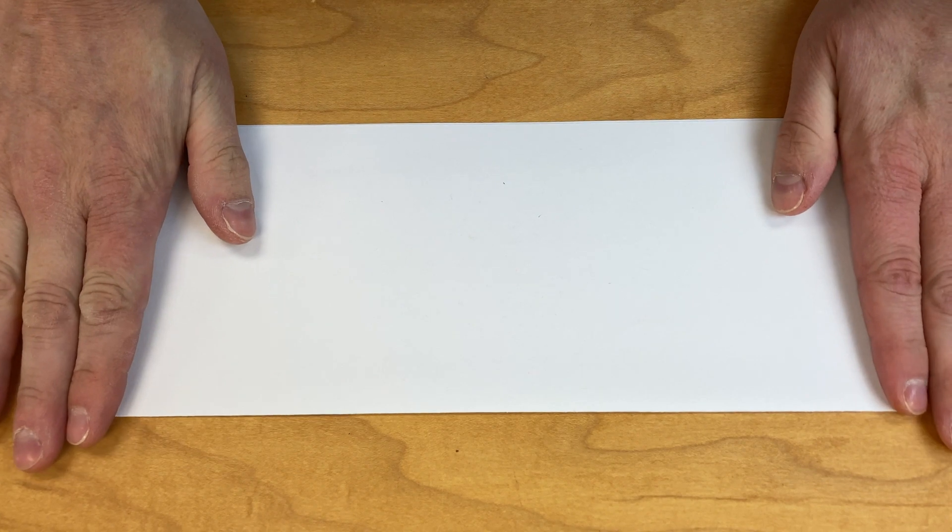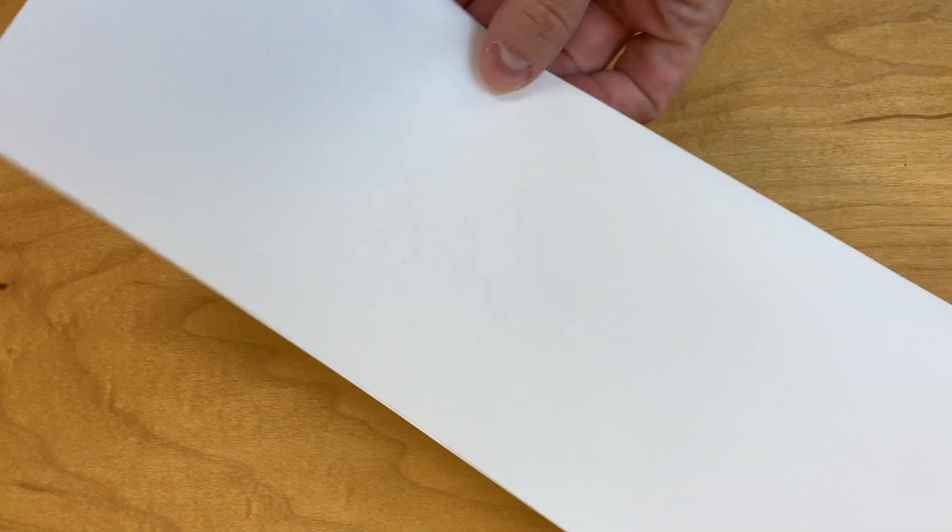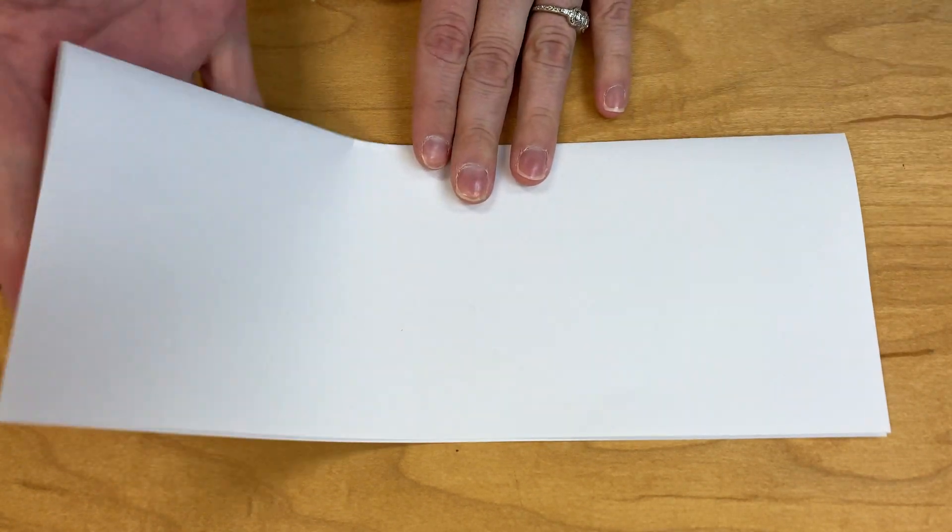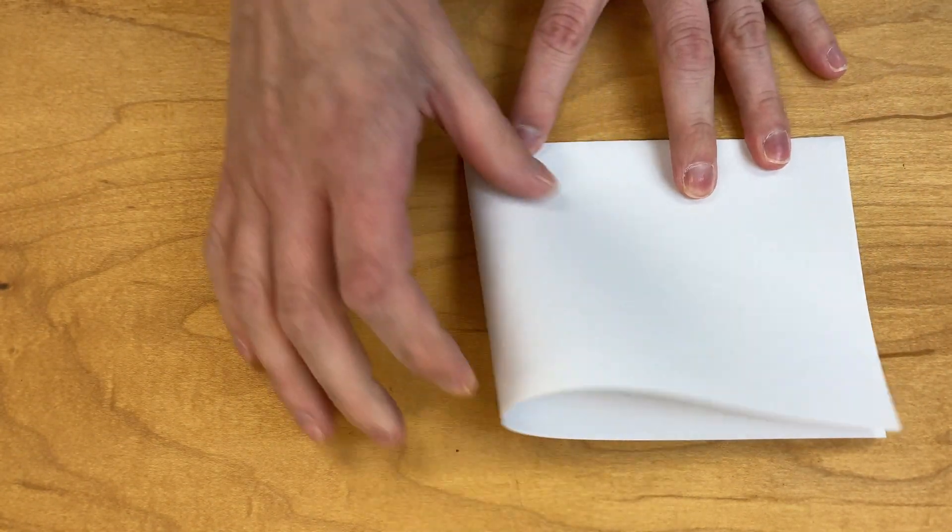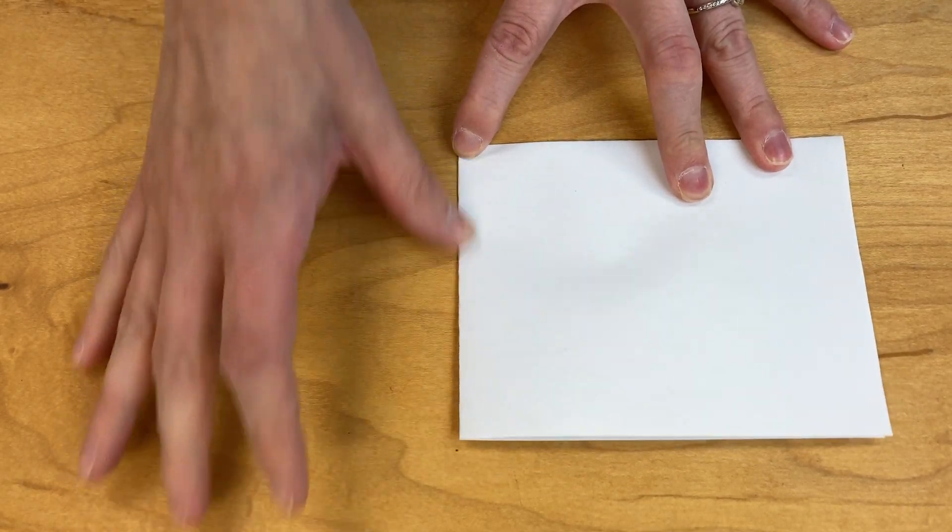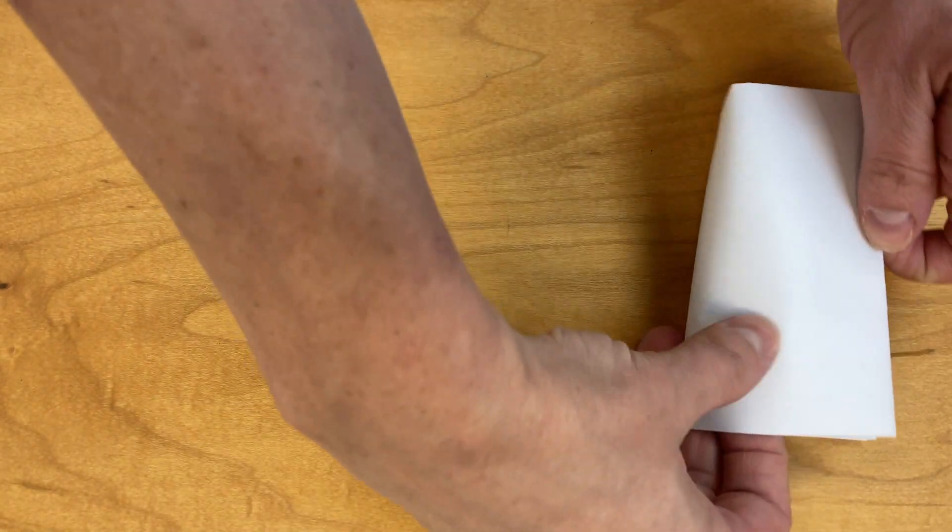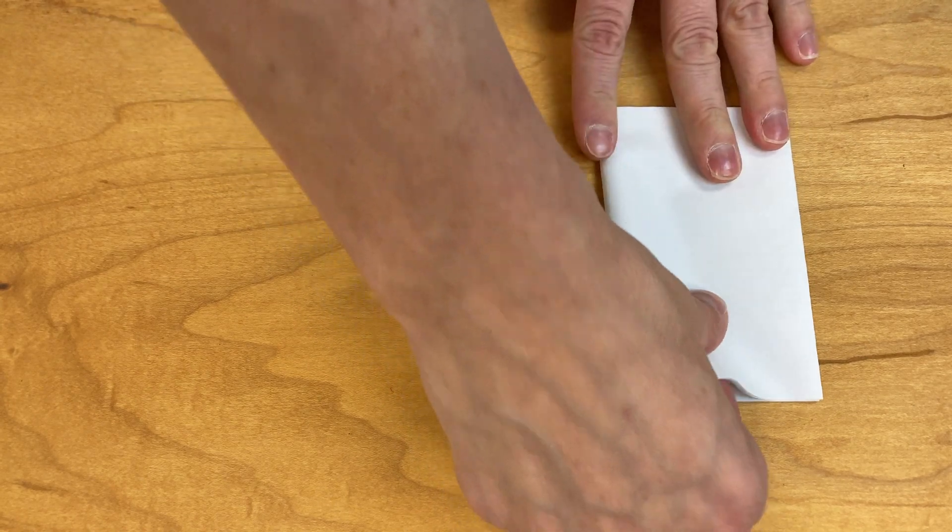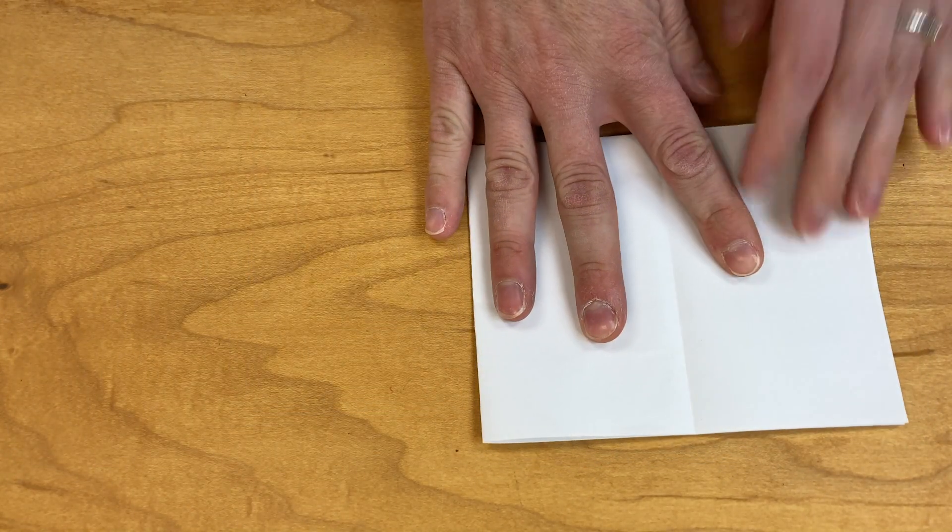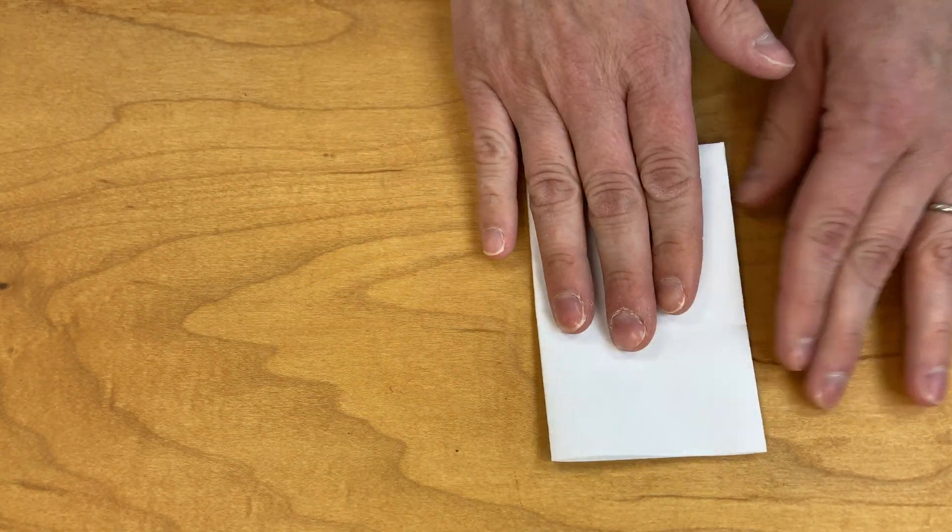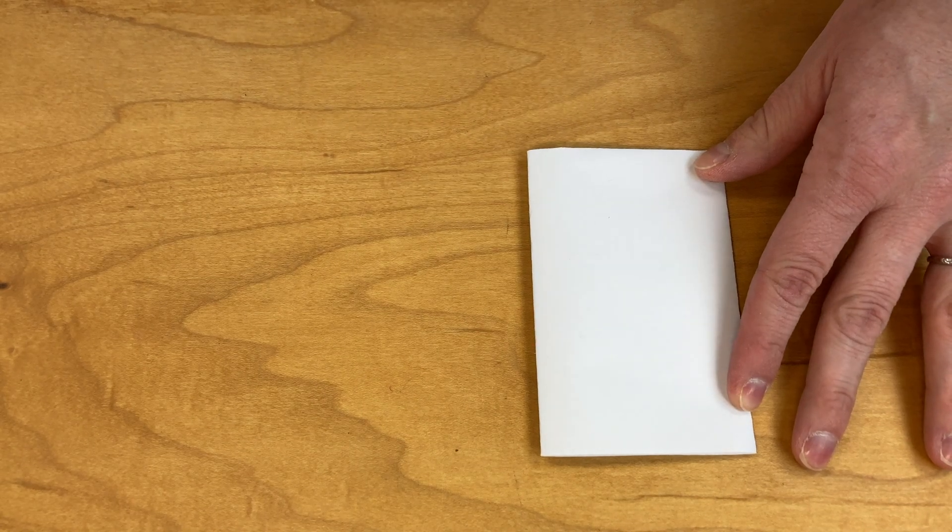Now I folded my paper in half the long way. Now I'm going to take this folded piece of paper and I'm going to fold it in half once like that and twice. I'm going to show you again. Here is my long fold. I fold it in half and then I fold it in half again just like that.